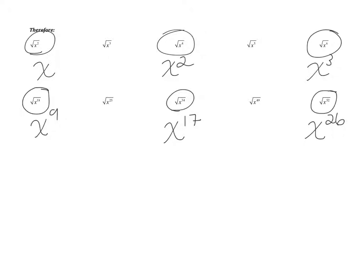Anything with an even exponent is a perfect square, but that does not mean we can't simplify variables with odd exponents. The same rule applies — you have to pull out the greatest perfect square that goes into the radicand. Let's look at the square root of x to the third. The closest perfect square to x to the third is x squared. We break it into the square root of x squared times x. The square root of x squared is x, and what's left on the inside is just x. So the answer is x square root of x.